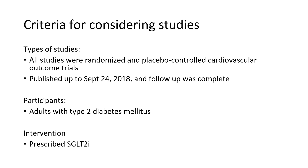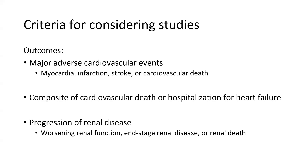These were the criteria for considering studies. They looked at all studies that were randomized and placebo-controlled cardiovascular outcome trials — since we are looking at therapy, this is the best study design. All studies published up to September 24, 2018 with complete follow-up were included. They looked at adults with type 2 diabetes and all trials which included SGLT2 inhibitors as the intervention. Again, they looked for MACE, composite of cardiovascular death or hospitalization for heart failure, and progression of renal disease.